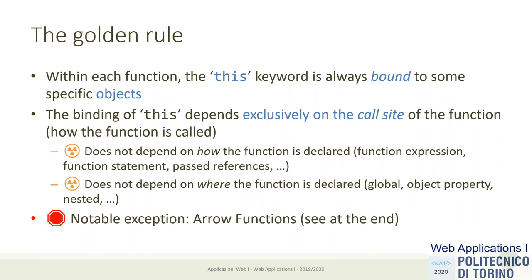The binding of 'this' does not depend on where you define the function and does not depend on where you call the function — it depends on how you call the function. A function may be called three times in different places in different ways, and every time the way in which you call the function will determine the specific value of 'this' for that specific call. It does not depend on how the function is declared.